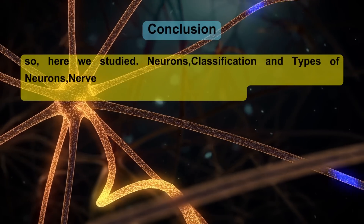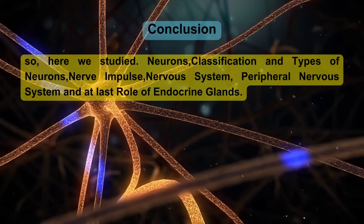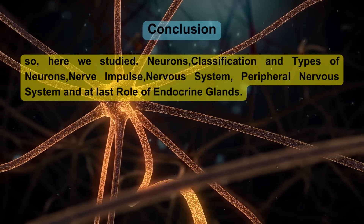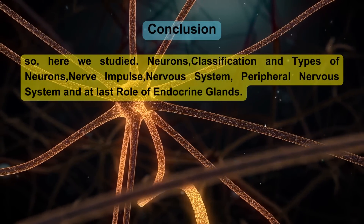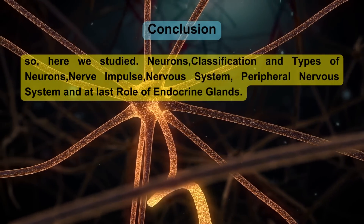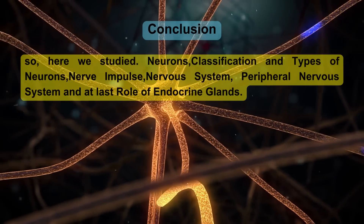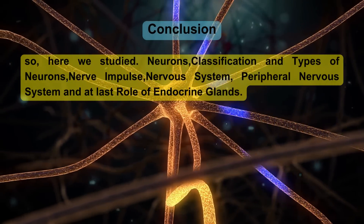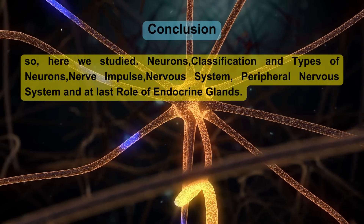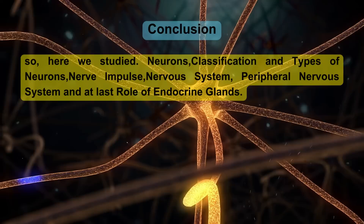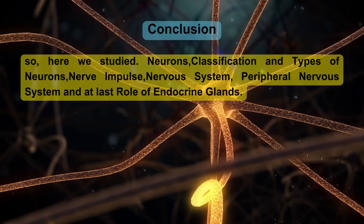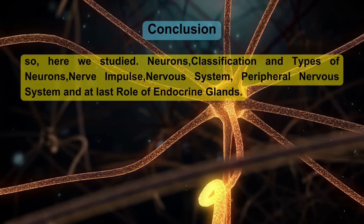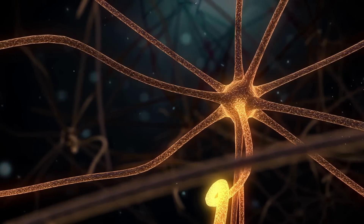In summary, here we studied neurons, classification and types of neurons, nerve impulse, nervous system, peripheral nervous system, and the role of endocrine glands.